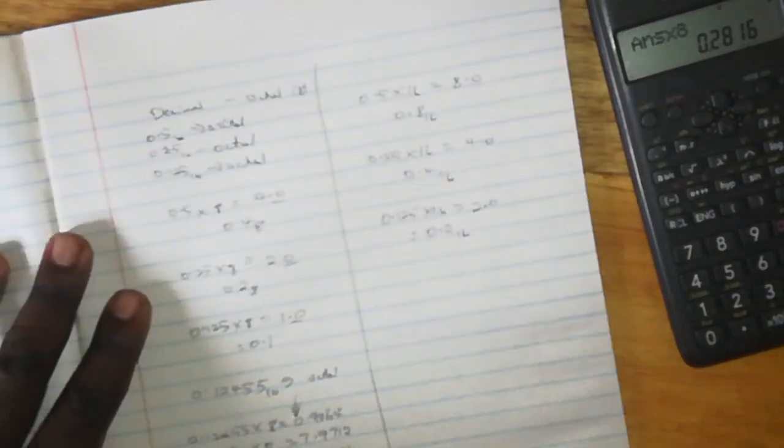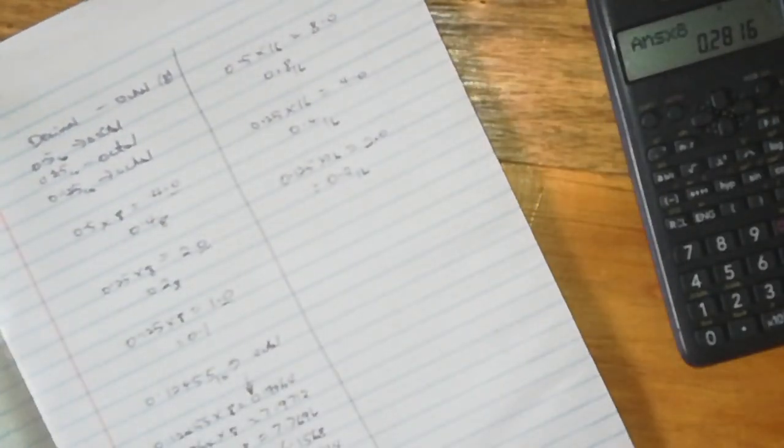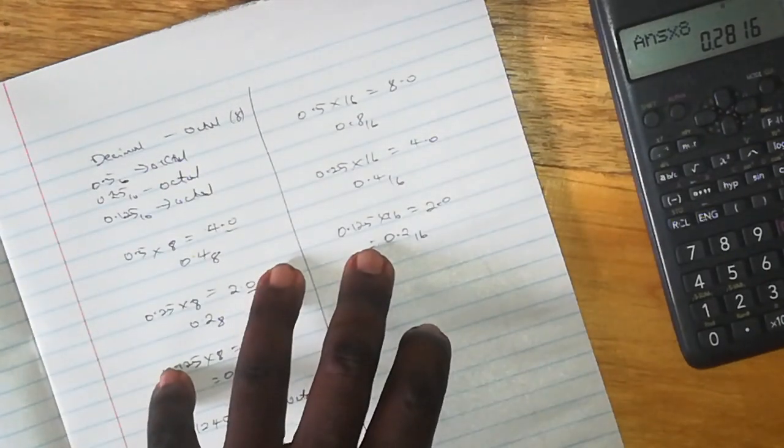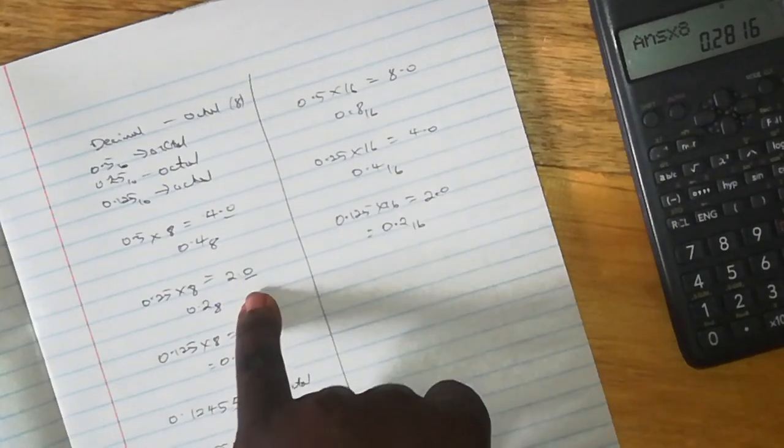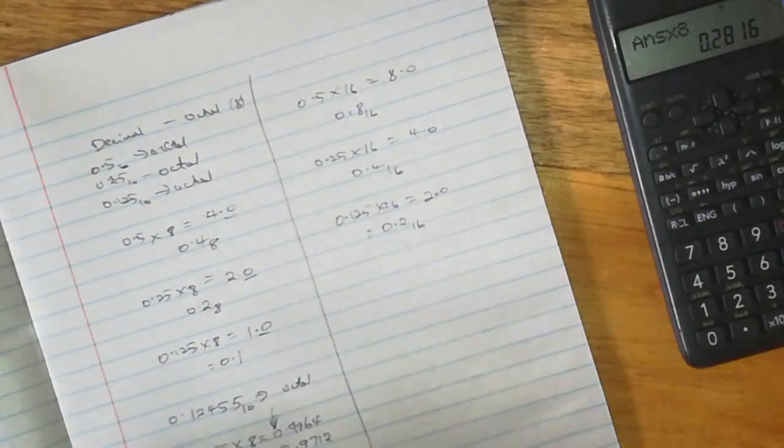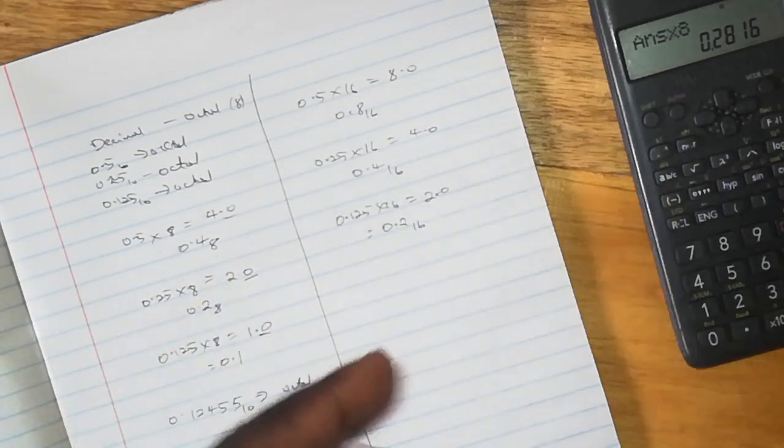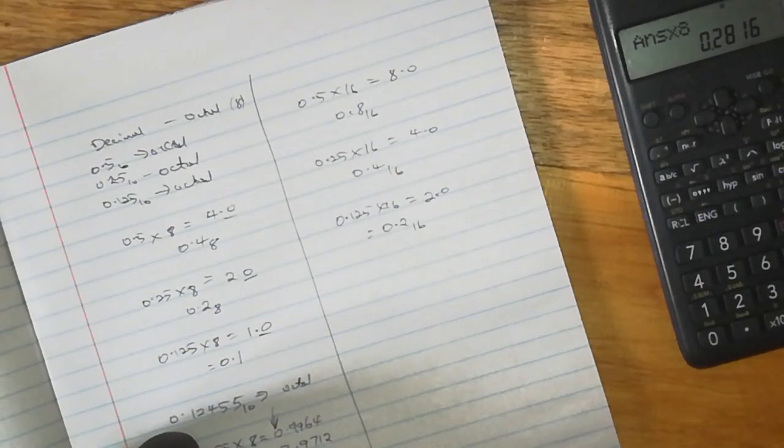So friends, that is how we can work out conversions of decimal fractions into the various other number systems like the binary number system, octal, and hexadecimal. That is it for this video. Thank you for watching. If you find it helpful, please subscribe, share with your friends, and we will do something else in our next video.